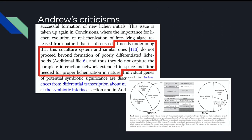Criticisms. I had a few criticisms of this paper besides that some of the figures were confusing, namely and I guess this isn't actually a criticism as the authors do mention it but it's in regards to their co-culture monoculture system that they use to explore the symbiosis between these two organisms which they describe saying it needs underlining that this co-culture system and similar ones do not proceed beyond formation of poorly differentiated lichenoids and do not capture the complete interaction network extended in space and time needed for proper lichenization in nature.